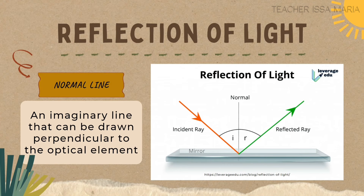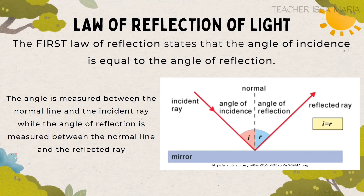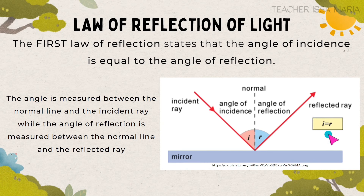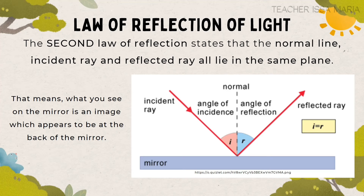Next is the normal line — an imaginary line that can be drawn perpendicular to the optical element. The first law of reflection of light states that the angle of incidence is equal to the angle of reflection. For example, if the angle of incidence is 25 degrees, then the angle of reflection is also 25 degrees because they are always equal. The second law states that the normal line, incident ray, and reflected ray all lie in the same plane.